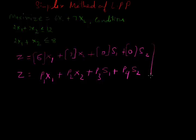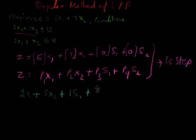Now we will follow the second step. This is the first step. In the second step, this condition shows us that these amounts are less than 12, so if it is equal to 12 we add something: 2x1 plus 3x2 plus 1s1 plus 0s2 is equal to 12.